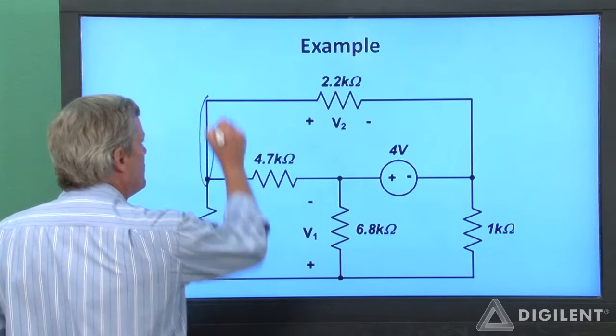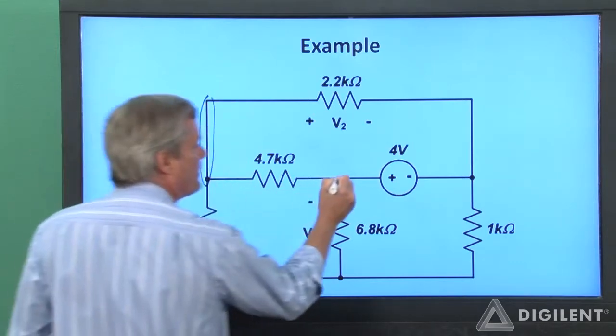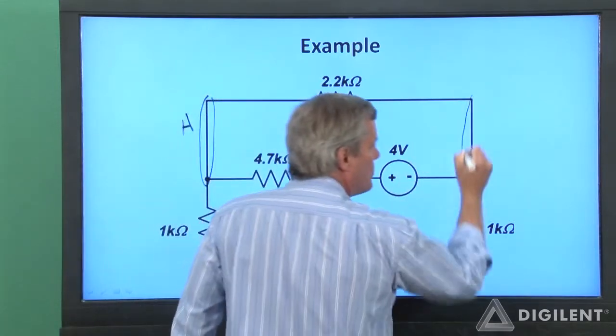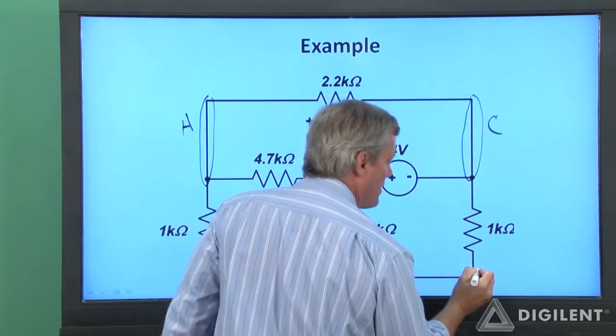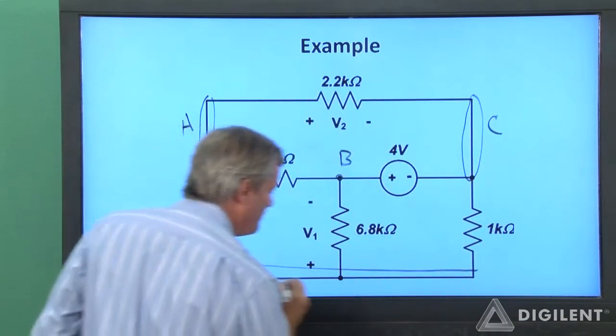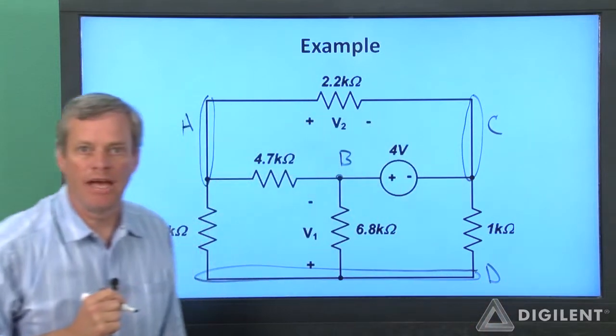I'm going to call this node here node A. This will be my node B. Node C will be here, and node D will be this node at the bottom of the diagram.